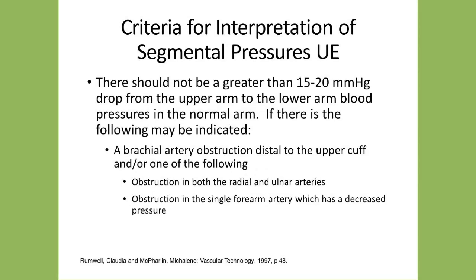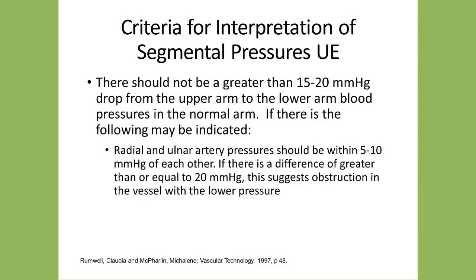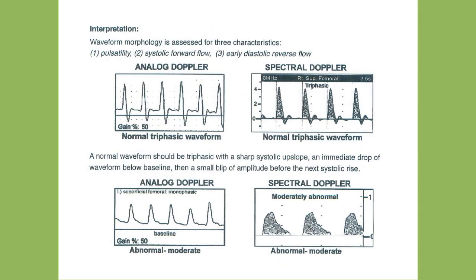For upper extremity evaluation, there should not be greater than a 15 to 20 mmHg drop from the upper arm to the lower arm; if there is, suspect brachial artery obstruction or reduced forearm artery pressure. Between the forearm and the wrist, a significant pressure drop may indicate abnormal radial and ulnar pressures. The radial and ulnar artery pressures should be within 10 to 15 mmHg of each other; a difference greater than 20 mmHg typically indicates obstruction in the vessel with the lower pressure.